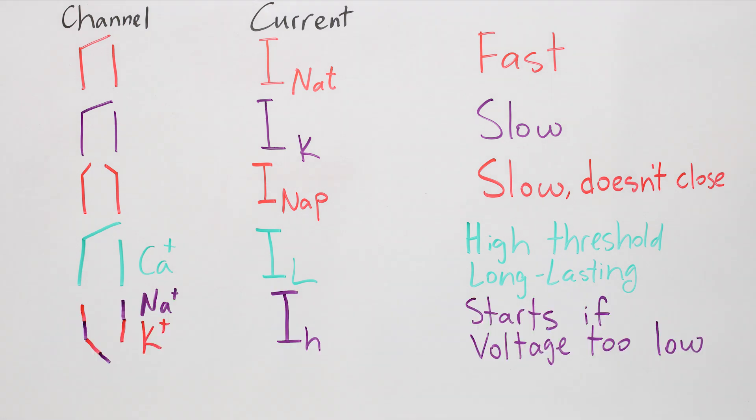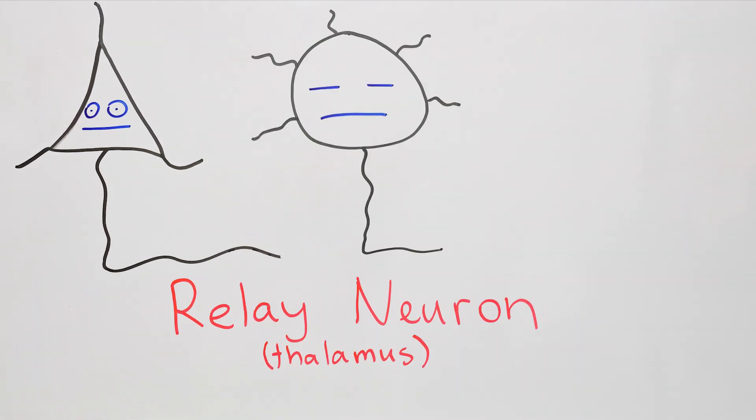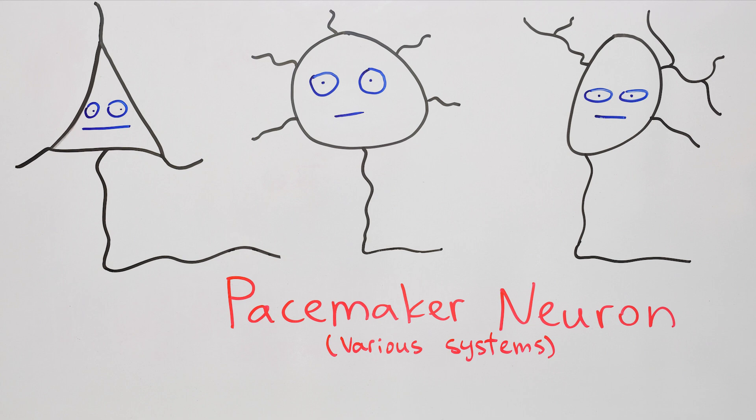A channel that opens when the voltage gets too low, and when it opens, allows a slow trickle of sodium and potassium ions. And there are dozens of other ion channels known to us, and probably more that we don't know about. And different combinations of these ion channels can produce different spiking patterns. Like in this pyramidal neuron from the cortex. Or in this relay neuron from thalamus. Or pacemaker neurons from various systems.